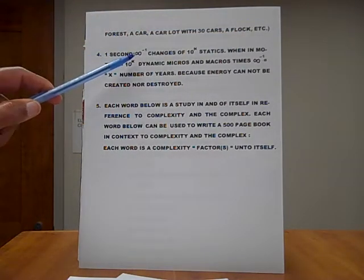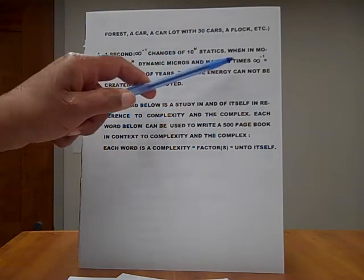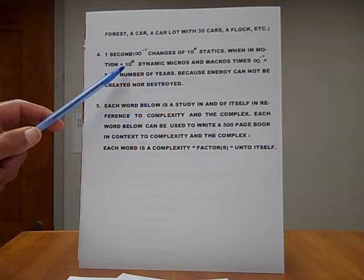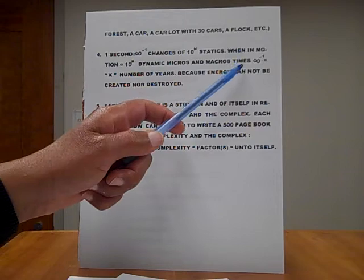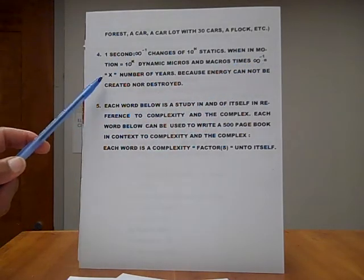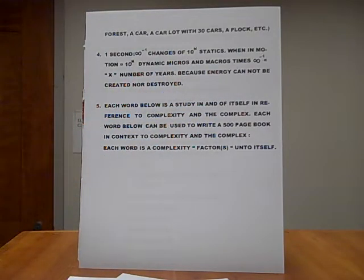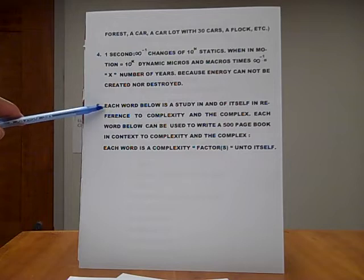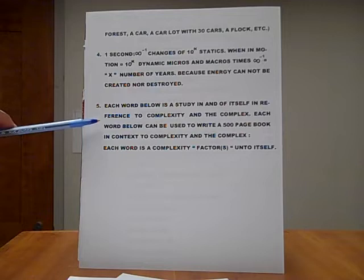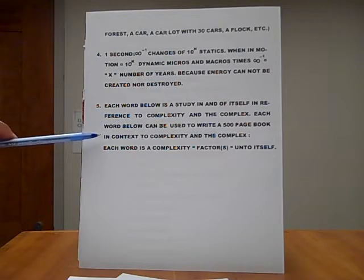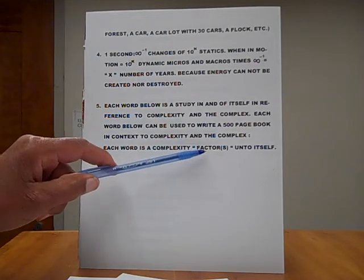Number four, one second is equal to infinity minus one number of changes of 10 to the nth power of statics. When in motion, it equals 10 to the kth power of dynamic micros and macros. And this is multiplied by infinity minus one, which equals x, number of years, because energy can neither be created nor destroyed, neither can a point. Number five, each word below is a study in and of itself in reference to complexity and the complex.